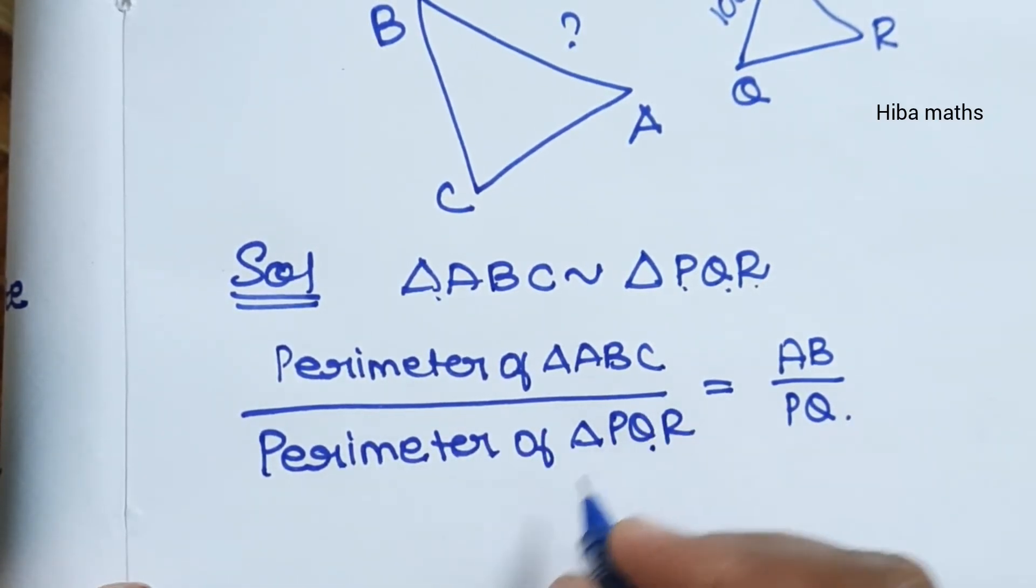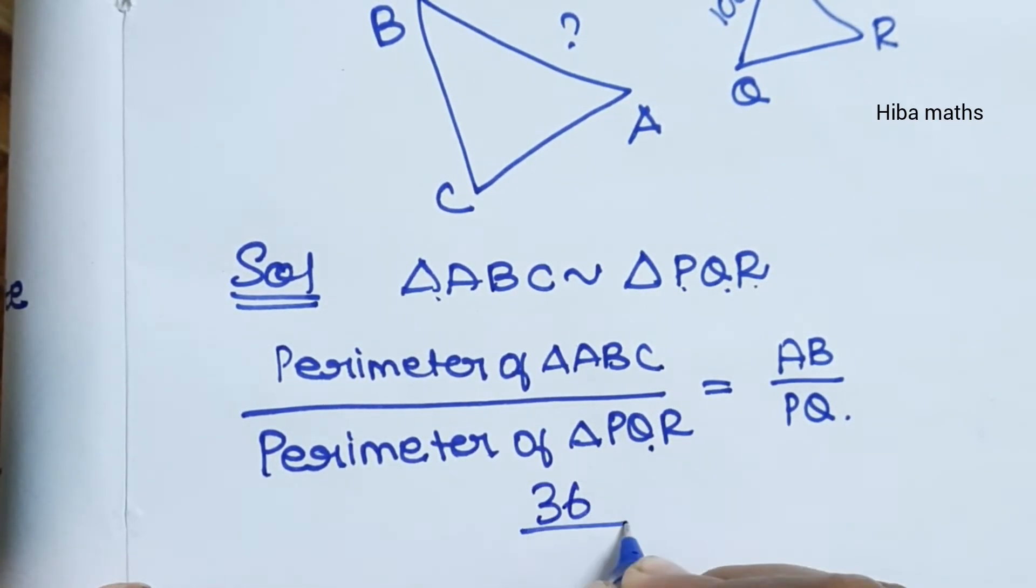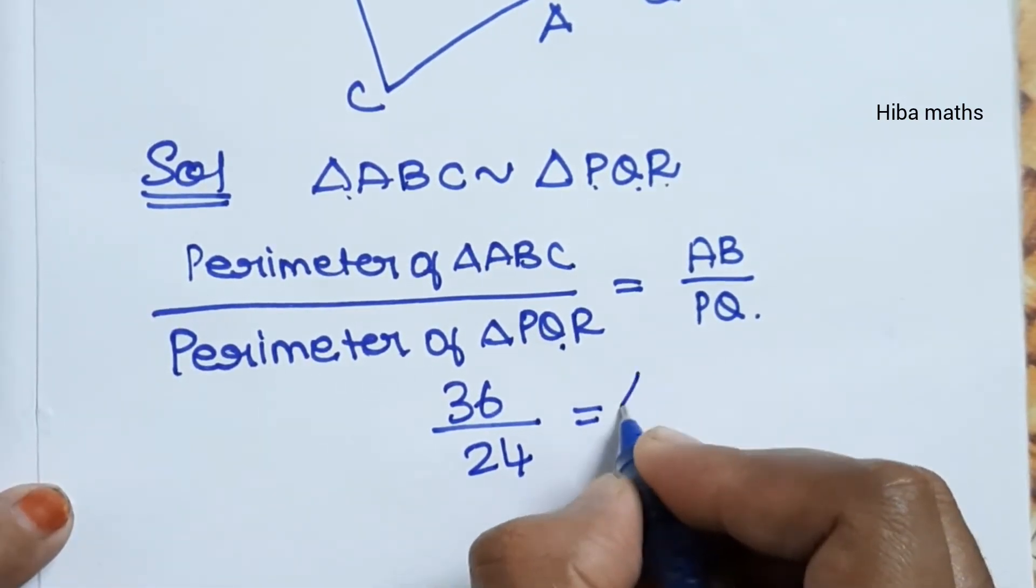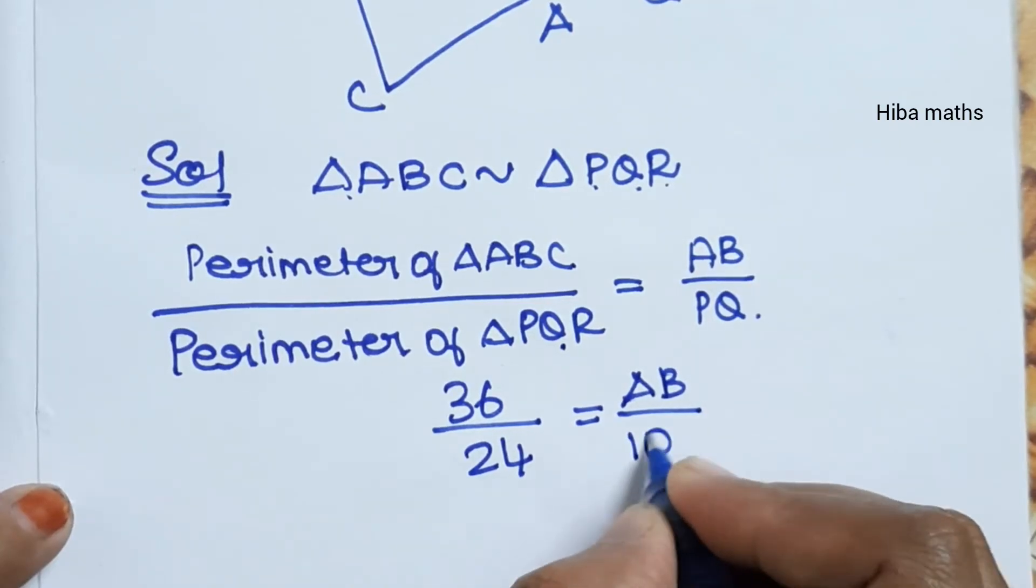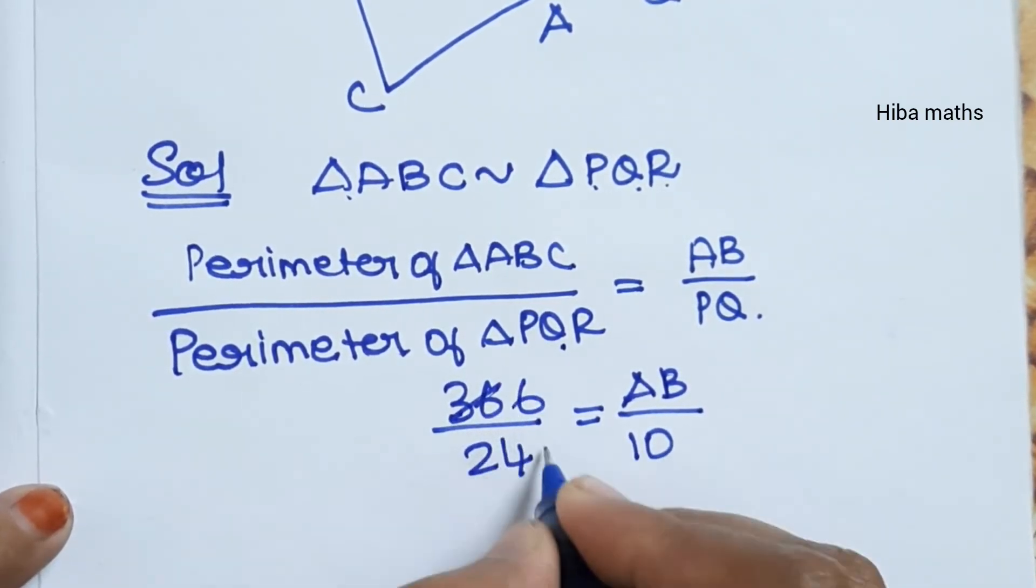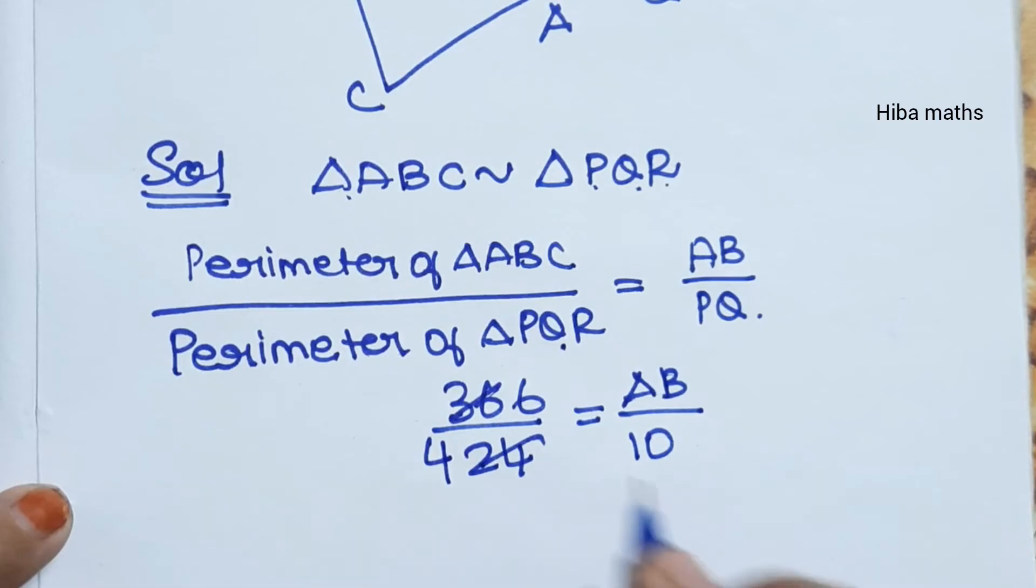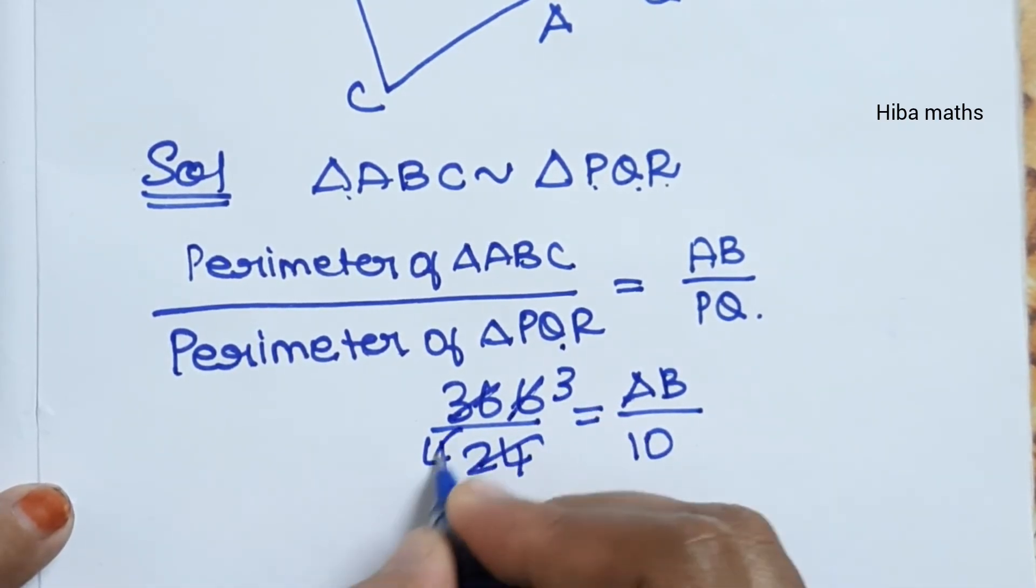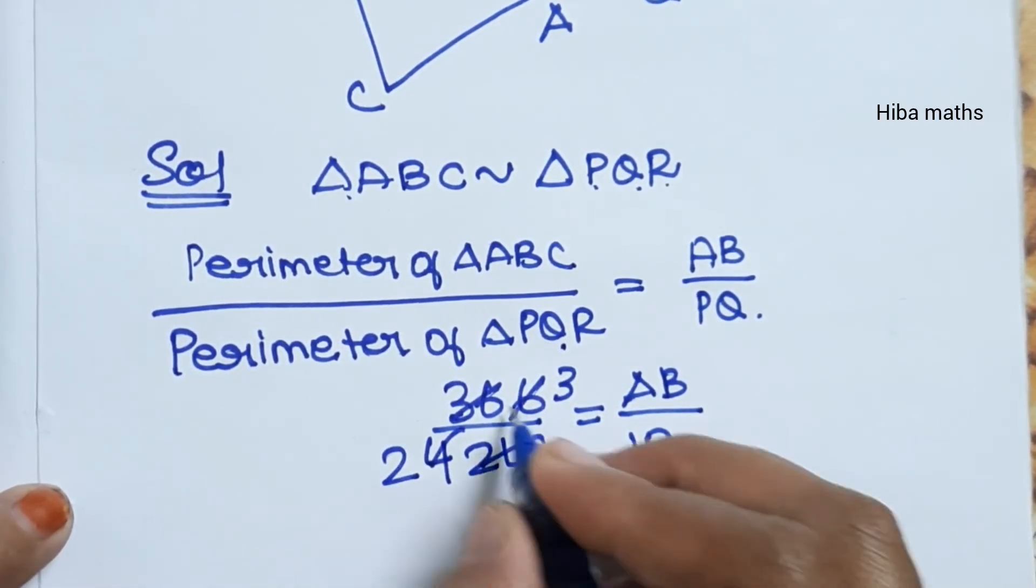Perimeter of ABC is 36 cm and PQR is 24 cm. PQ value is 10. So 36 divided by 24 equals AB divided by 10. Cancel: 6 divided by 4, cancel again to 3 divided by 2. Now 10 is on this side.